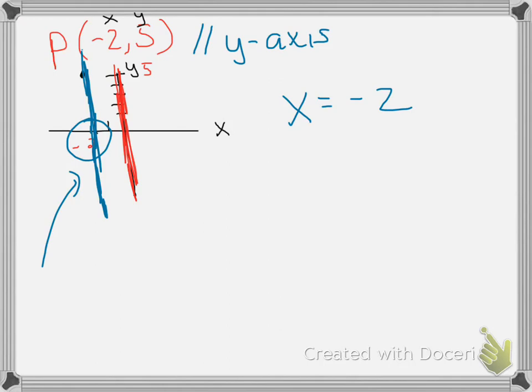We don't write a big equation. This is in slope-intercept form, standard form. It's whatever. This is our equation. And so we write this as x equals negative 2.